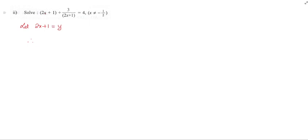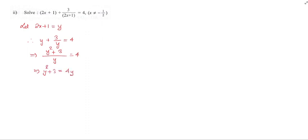Therefore, substituting y equals 2x plus 1, we have y plus 3 over y equals 4. Multiplying both sides by y, we get y squared plus 3 equals 4y. Rearranging gives y squared minus 4y plus 3 equals 0.